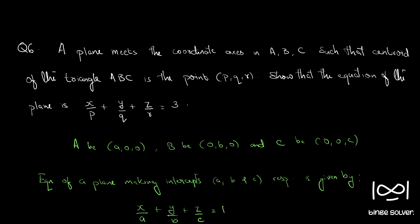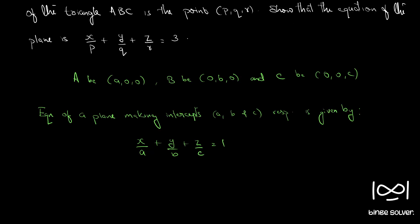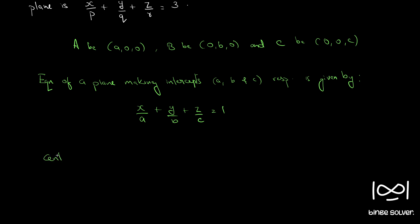it is given that the centroid of the triangle ABC is point (p, q, r). What is the centroid of the triangle? So, the centroid of the triangle ABC, that is, the triangle formed by (a, 0, 0), (0, b, 0), and (0, 0, c), is given